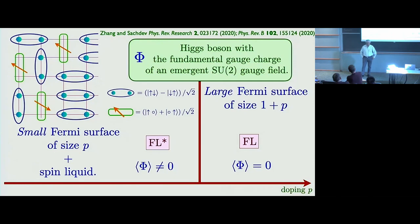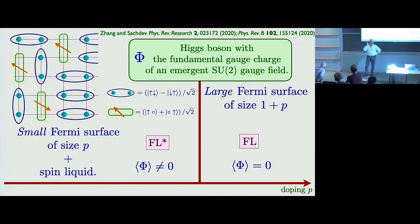In our colleagues' results, when they do a somewhat different approach they actually get a divergent correction — which diverges as 1/T from the leading-order result — when they include those graphs. The divergent correction tells you that you have to resum the perturbation series; you're not doing it in the right way. Sorry, he should be here to defend himself, but since you asked, that's my opinion.